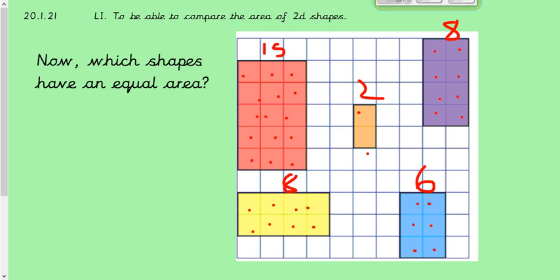OK, welcome back. Hopefully you managed to work that question out. So I've just gone through them and worked out the area of each shape. So the red one here is 15 squares. This yellow one down here is eight. The one in the middle is two. Purple is eight. And the blue one is six. Therefore, the yellow and the purple have an equal area.